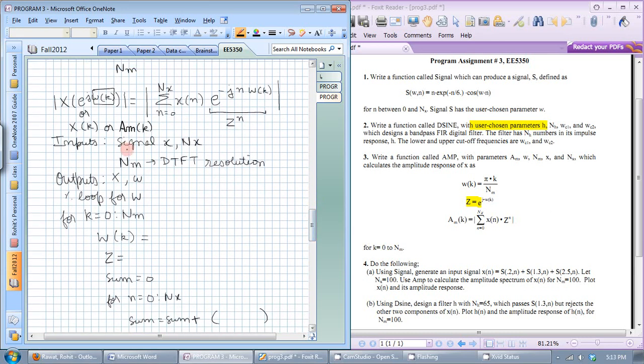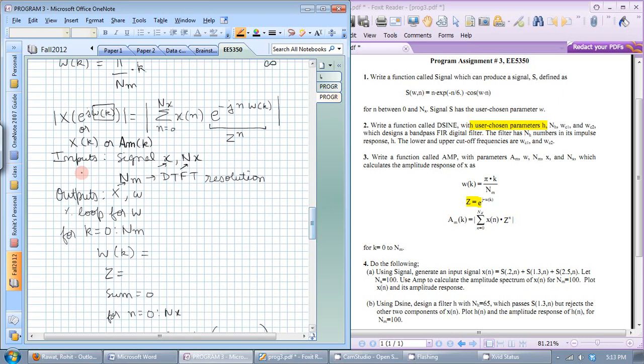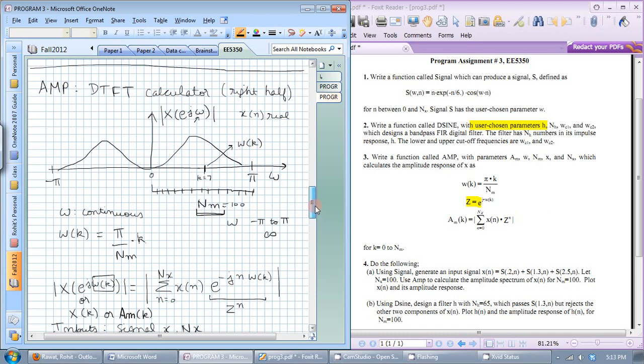M is not a variable it's just a name so you can say a of k or am of k something like that. Now the inputs to this function would be the signal x its length and nM how many points do you want on the DTFT that's the DTFT resolution. The output would be the DTFT of the signal and the omega axis.